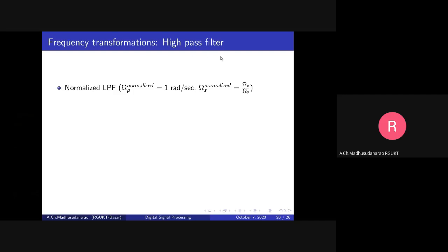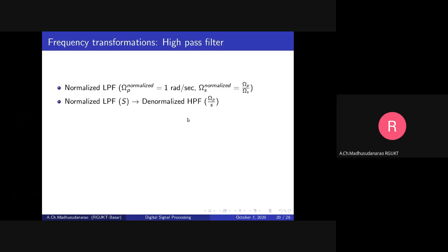For the high pass filter design, first design a low pass filter with these specifications: Omega P normalized = 1 radian per second, Omega S normalized = Omega_P / Omega_S, passband ripple Delta_P, and stopband ripple Delta_S. Once you design the Butterworth or Chebyshev low pass filter with these specifications, apply the transformation: replace S with Omega_P / s. This corresponds to the denormalized high pass filter — you get the H(s) expression.